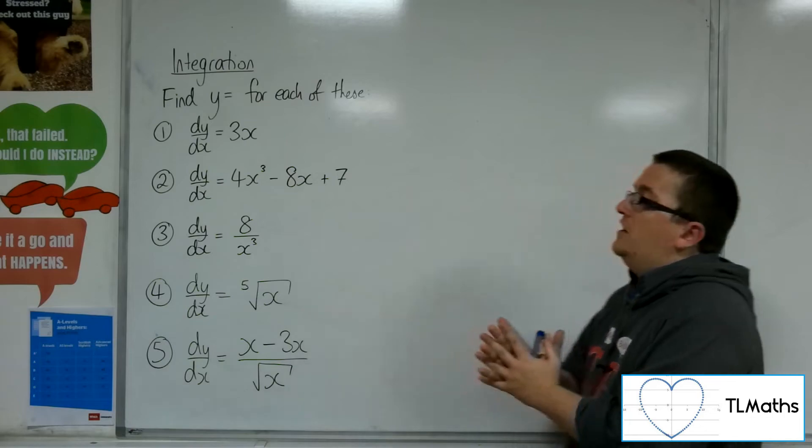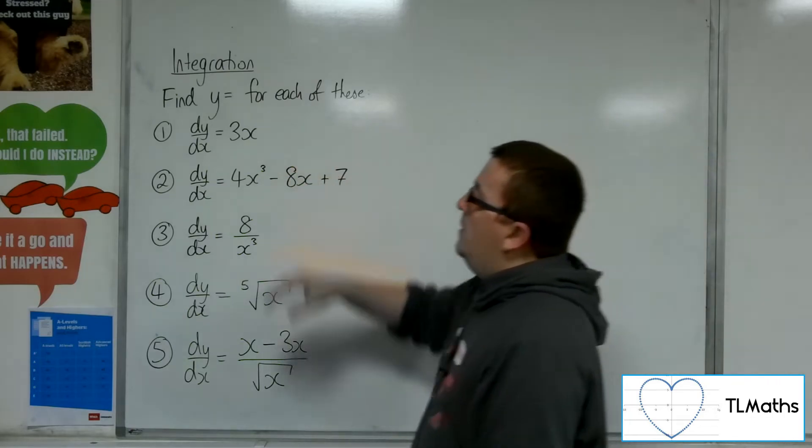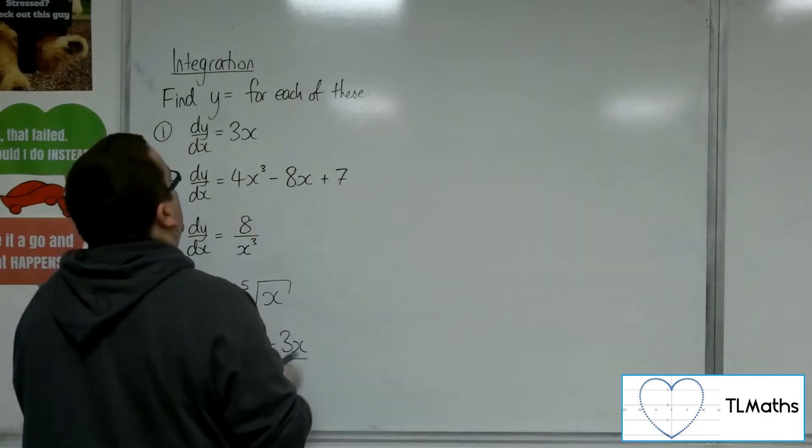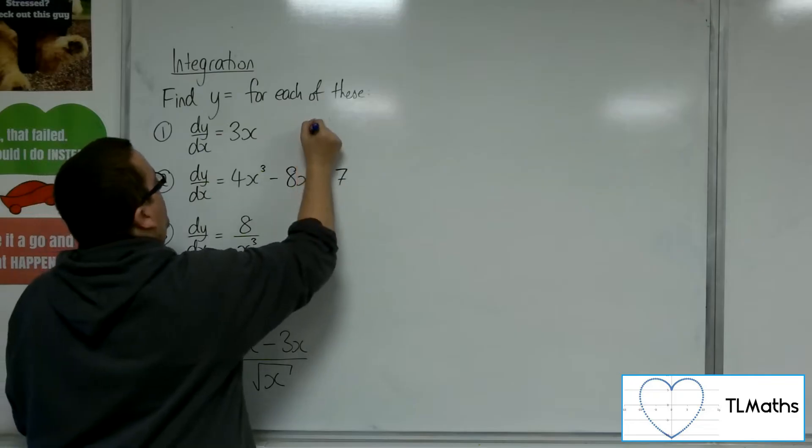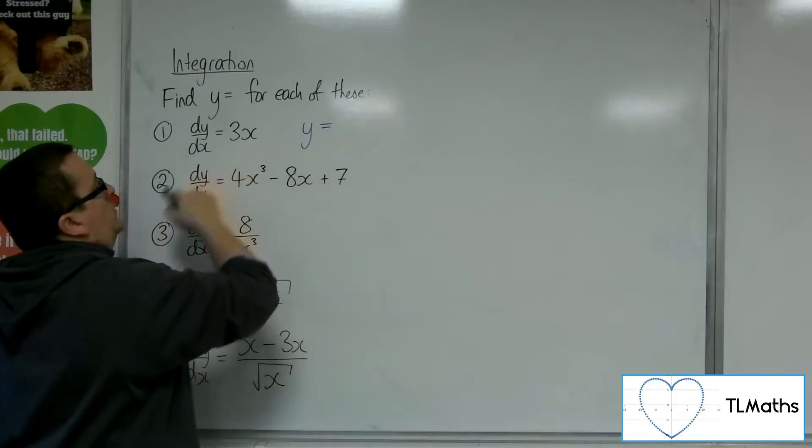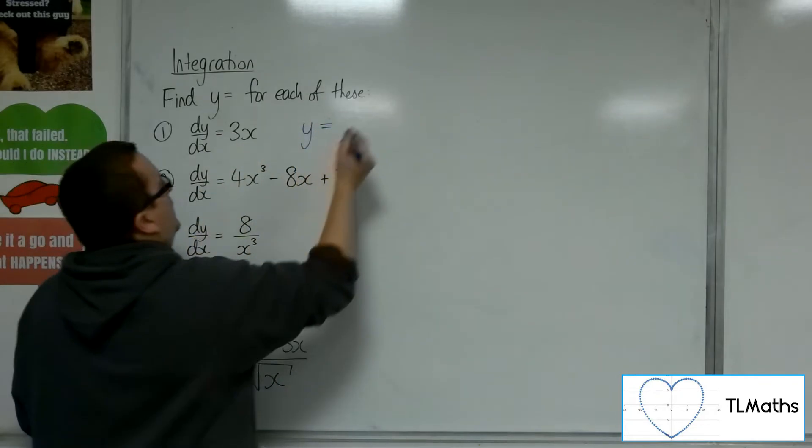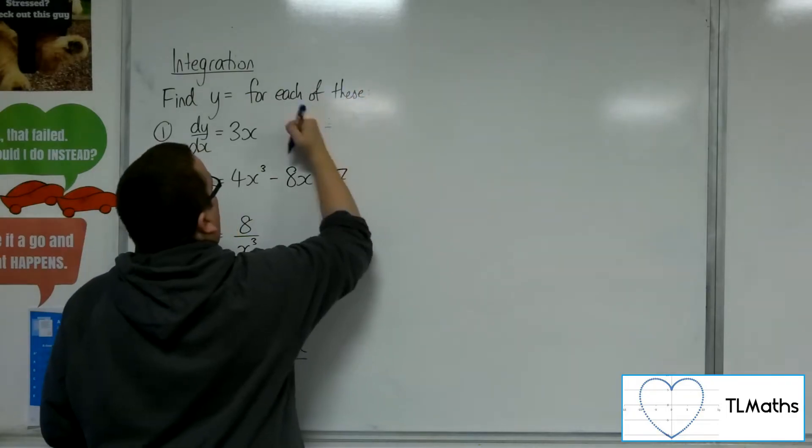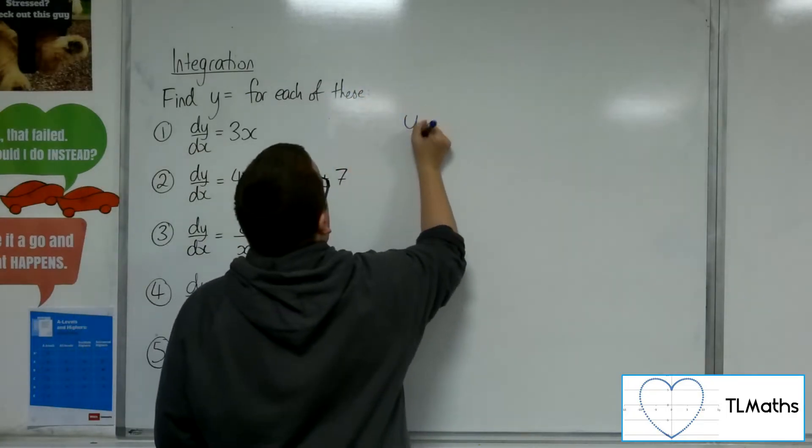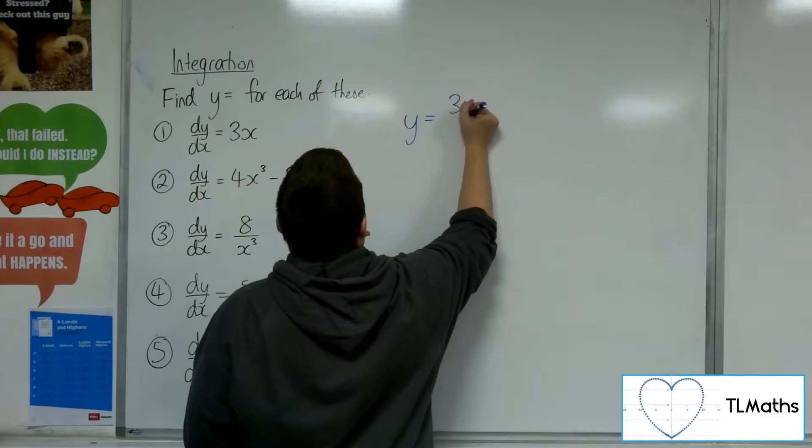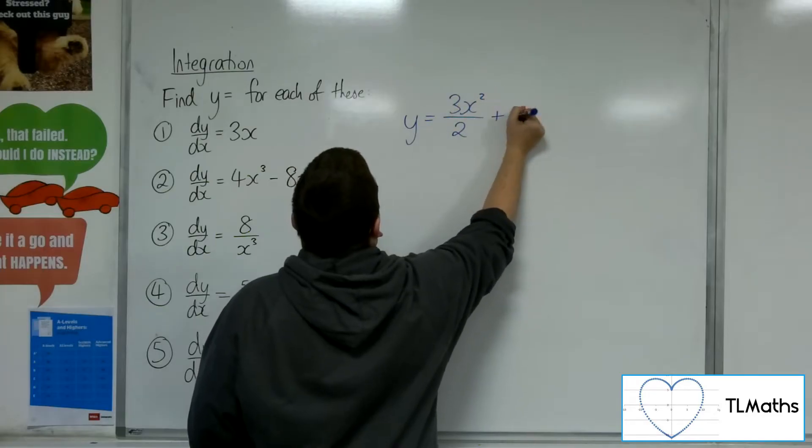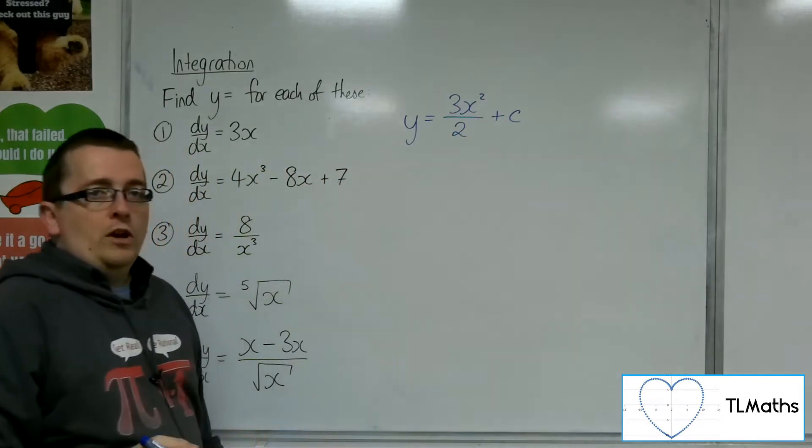So, let's get started. If dy by dx is equal to 3x, then y will be equal to the integral of 3x, which is adding 1 to the power. Let me move myself over here. We're going to add 1 to the power and divide by the new power. And then we've got that plus c constant of integration.